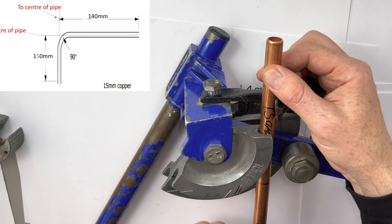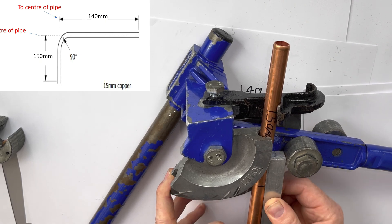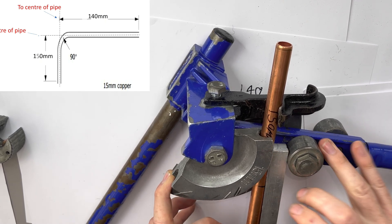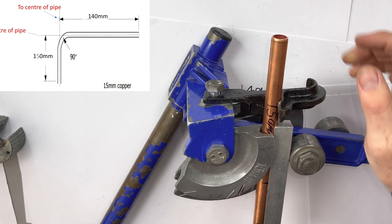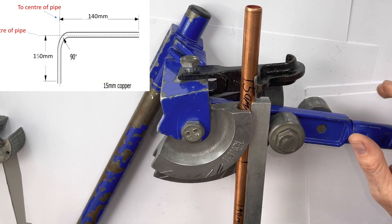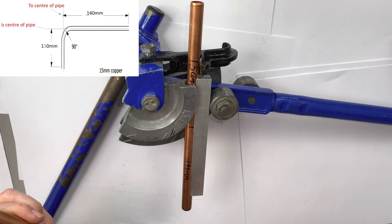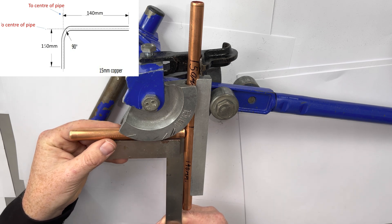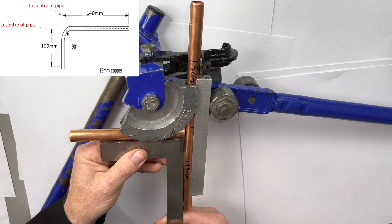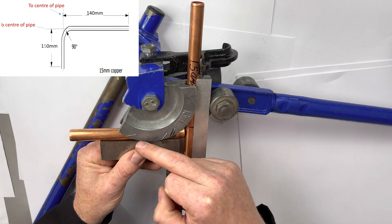Let's put the pipe into the bender. Okay so this is what the pipe will look like when it's bent 90 degrees.